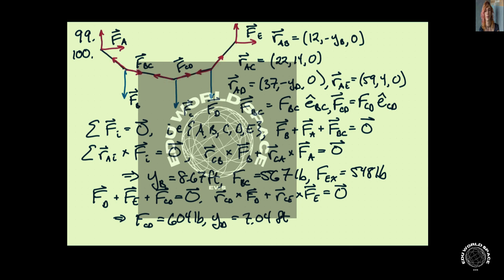We have points A, B, C, D, and E. Let's see here, I'm going to use A as the origin. We don't know the vertical component of point B. We know everything about point C.